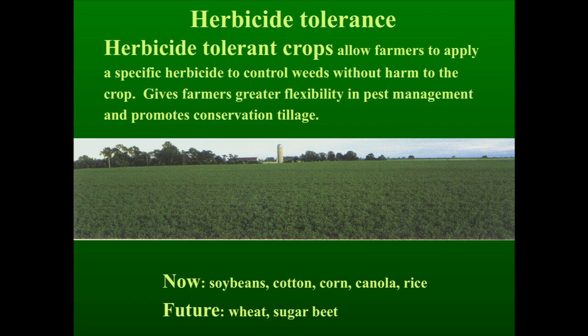The next traits introduced were herbicide tolerant crops. Corn, canola, rice, cotton, and soybeans have ample examples that are herbicide resistant. Roundup resistance is common and very useful. Roundup itself is a pretty good herbicide — very effective and environmentally safe. And you can see examples of herbicide resistant corn even locally grown here. The yield is dramatically improved.